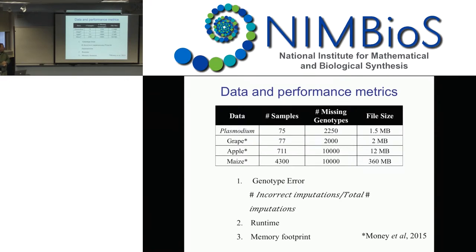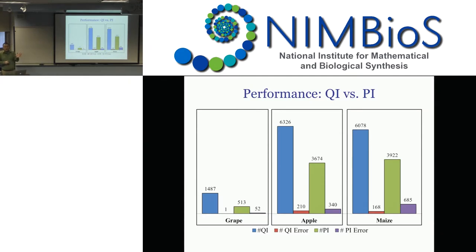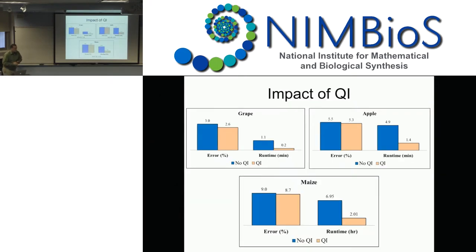Looking at the results: here's the grape dataset, the apple, and the maize. For grape, quick compute is awesome — it only makes one mistake when doing the simple thing, so our performance on grape is much better. These are the ones that can't be imputed — red on one side, green on the other — about 10% error rate on those. For apple, by and large we do really well on the quick impute. For maize, again, we're doing really well on quick impute. So we want to compare with and without the adaptive step. What quick impute does is look at just one neighbor, whereas with adaptive impute we look at six, seven, or eight — however many we can confidently use.